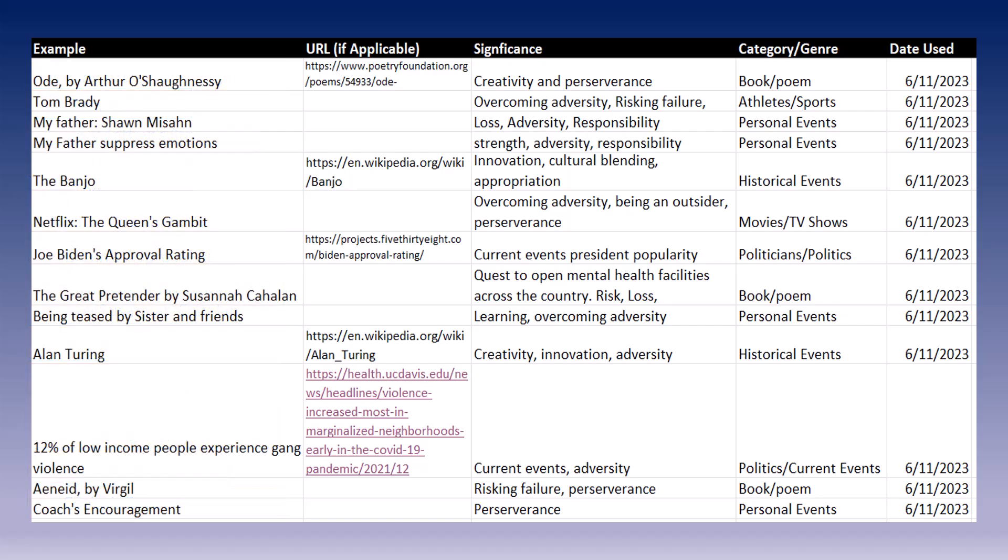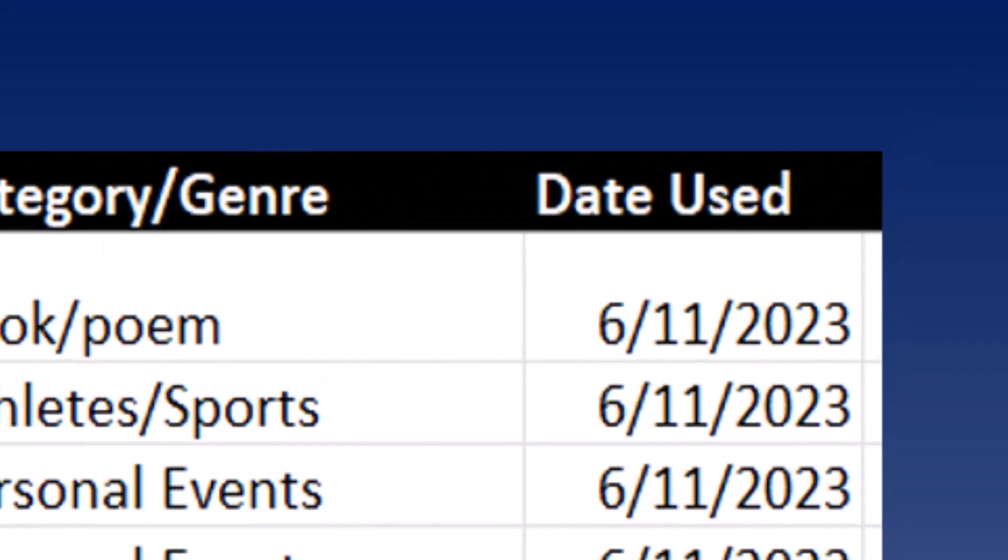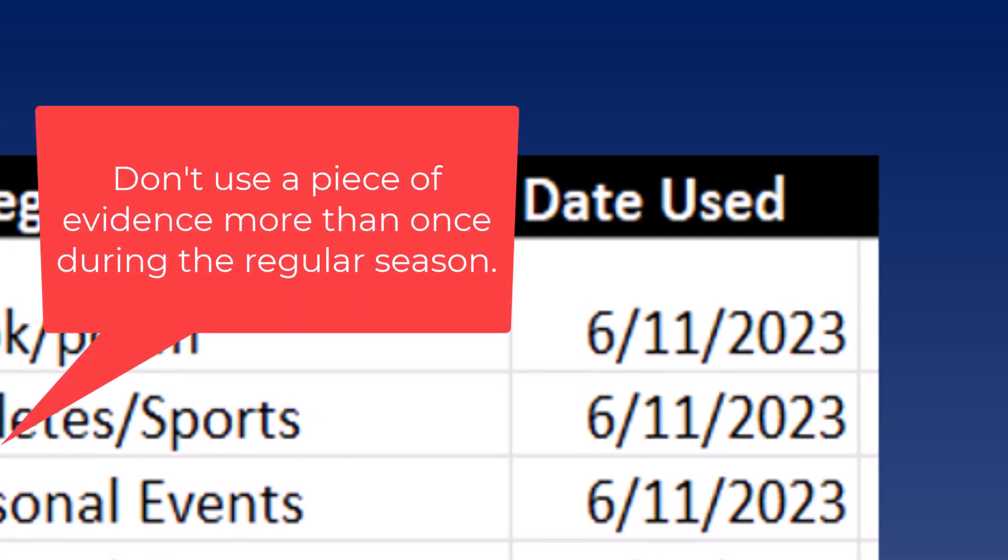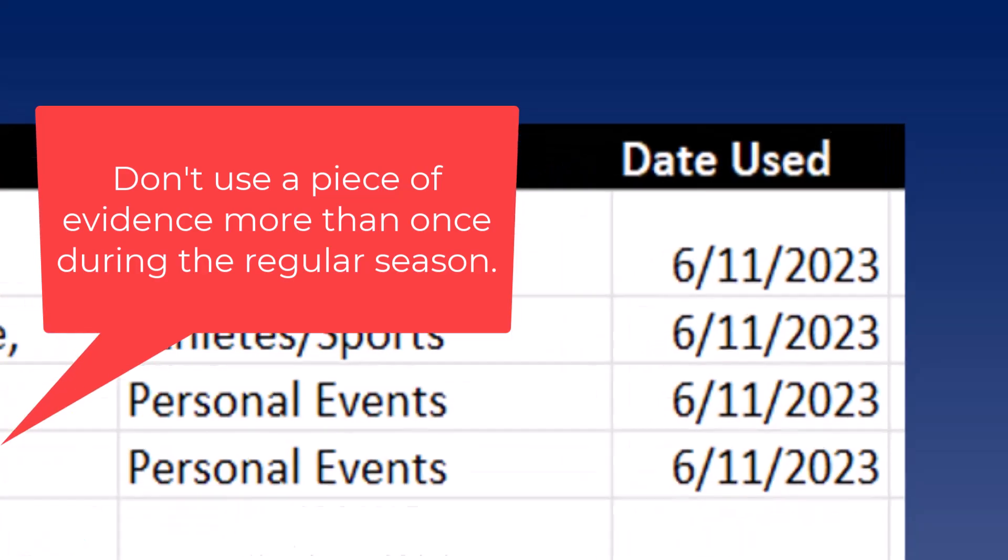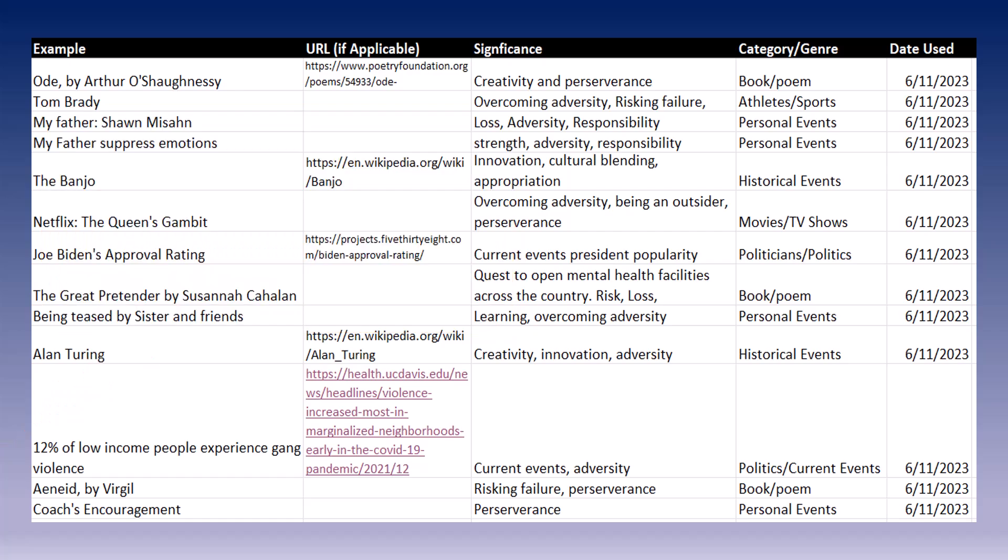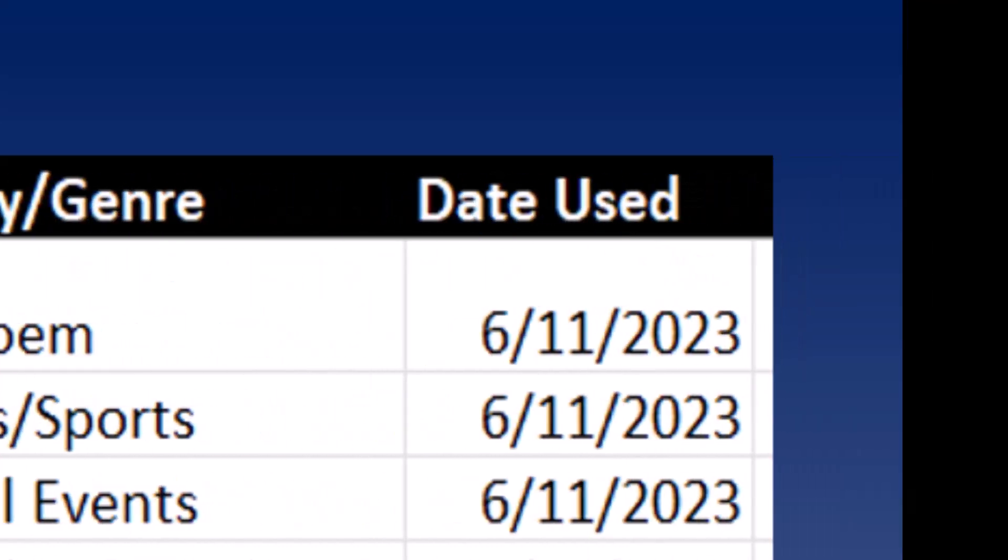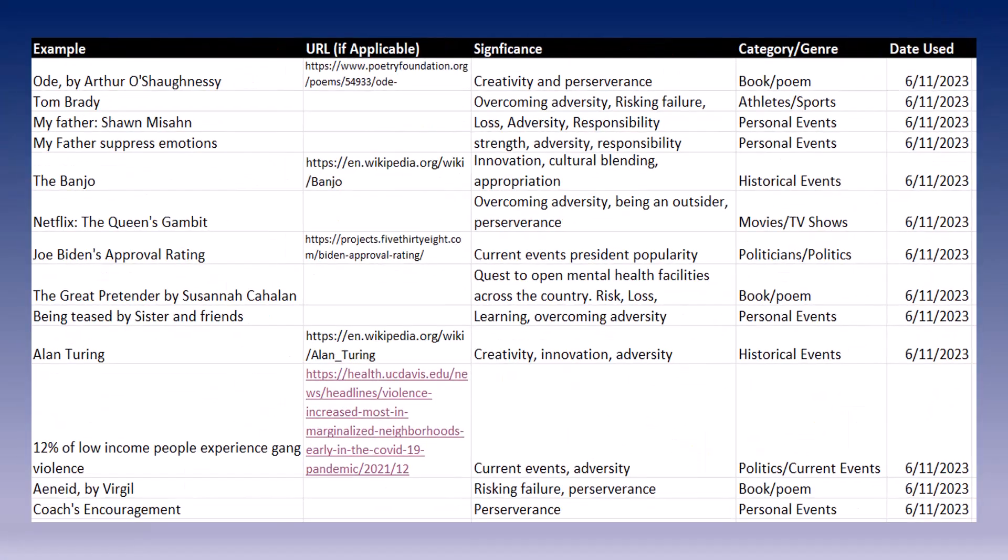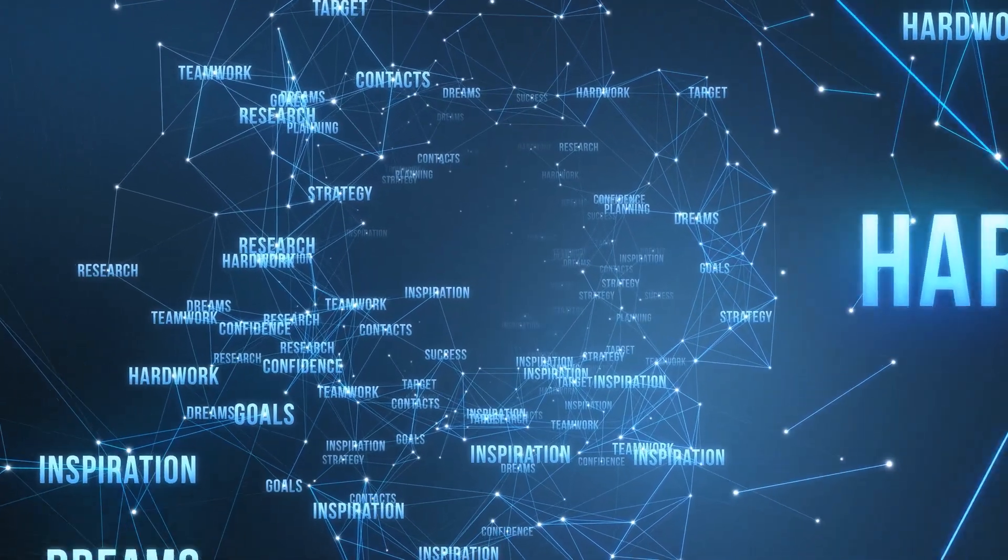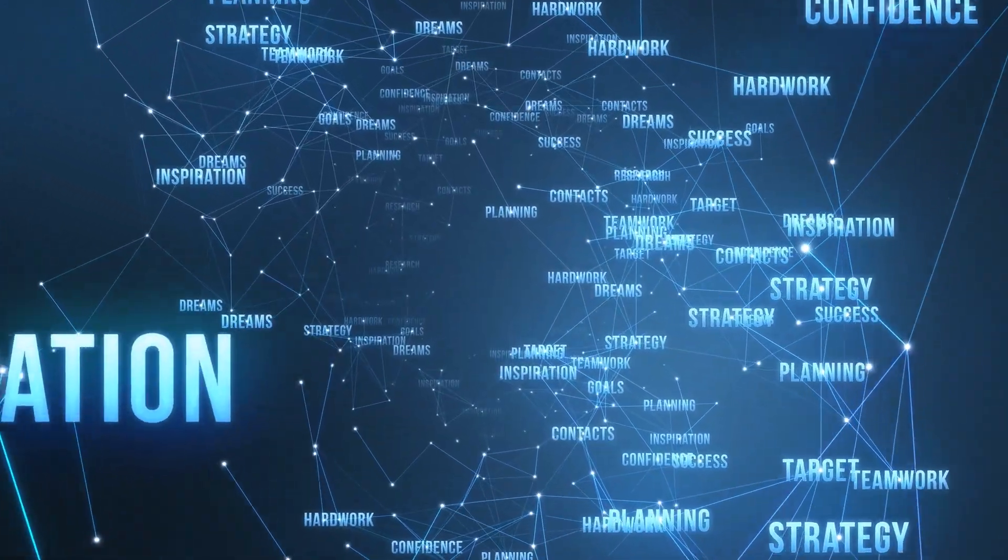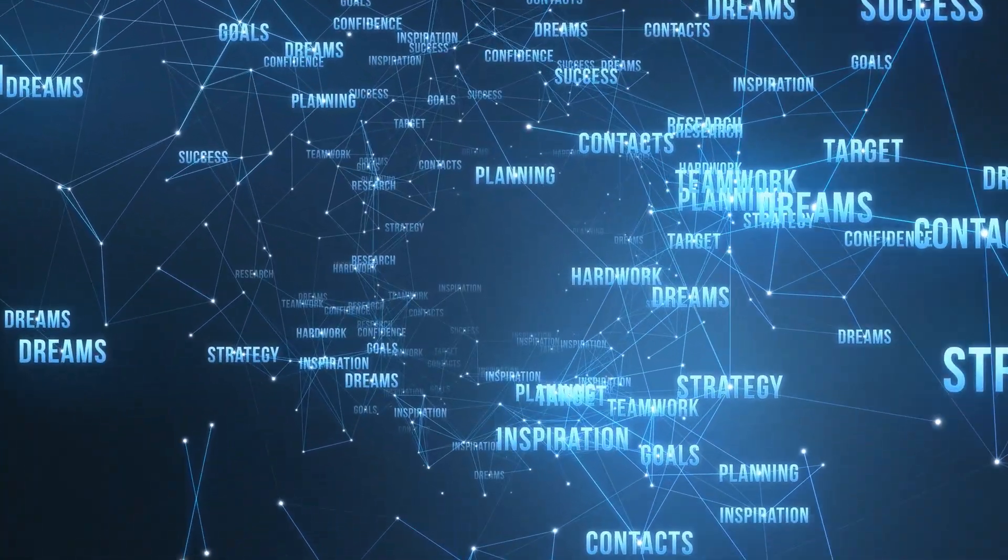One of the things I want to come back to quickly is the issue of date used. I want to make a practice that everybody uses evidence only once until we get to the postseason tournaments like sectional states and nationals. For instance, if you use the poem by author O'Shaughnessy in a November tournament, I don't want you to use that again until we get to the postseason. What this is going to do is force you to broaden the amount of examples so you can be well prepared with many examples when we get to the postseason.